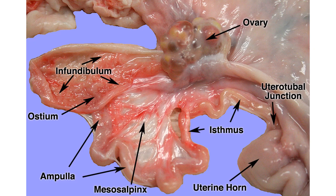Next, we have the oviducts. The oviducts lie beyond the uterine horns and adjoin them to the ovaries. In this structure, we have the ovary and the uterine horn, and the portion in between is the oviduct. The surface of the infundibulum is covered with the fimbriae, but they cannot be resolved at this level of magnification. This portion represents the infundibulum and we also have the ostium of the oviduct. The infundibulum with the fimbriae functions to capture the oocyte at ovulation and transport it into the ostium. The ostium is the opening into the oviduct. The junction between the uterus and the oviduct is known as the uterotubal junction. The oviduct is supported by the mesosalpinx.